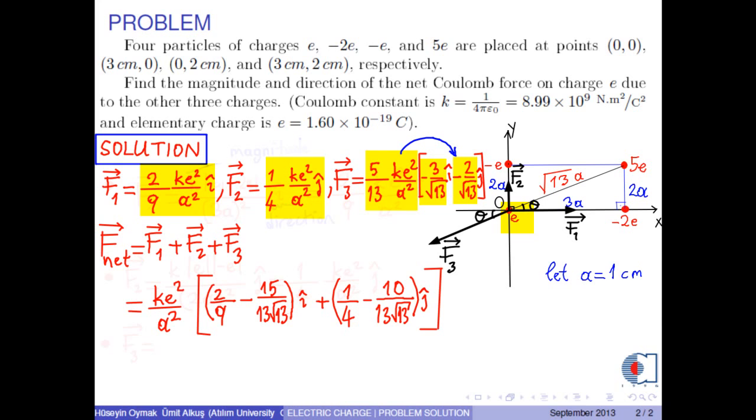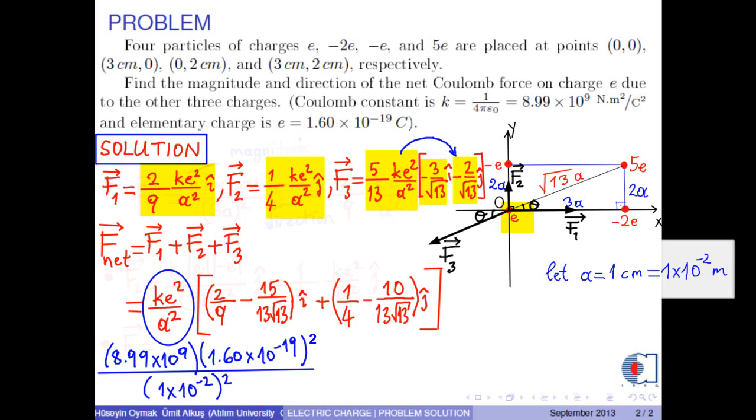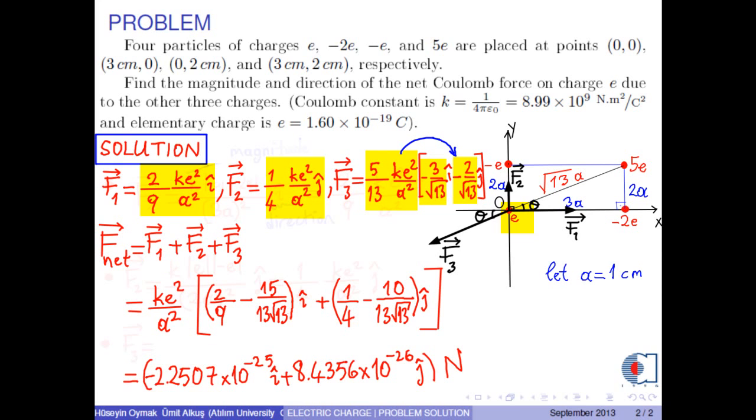Now, if we put the numerical values of K, E, and A, which is 1 centimeter, where the unit of centimeters is not an SI unit and we convert it into meters as 1 times 10 to negative 2 meters. Therefore, the calculation gives, which is in newtons, or simply...